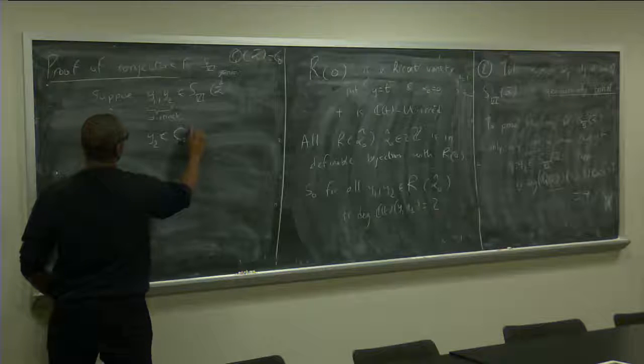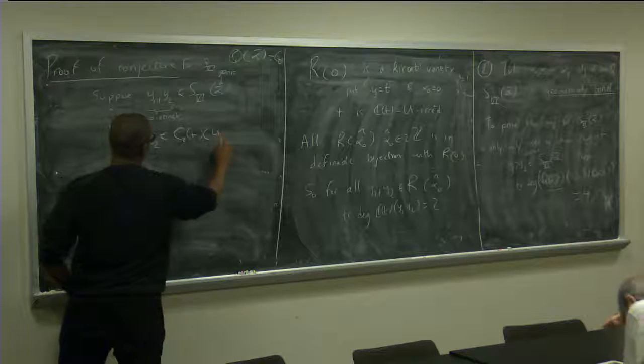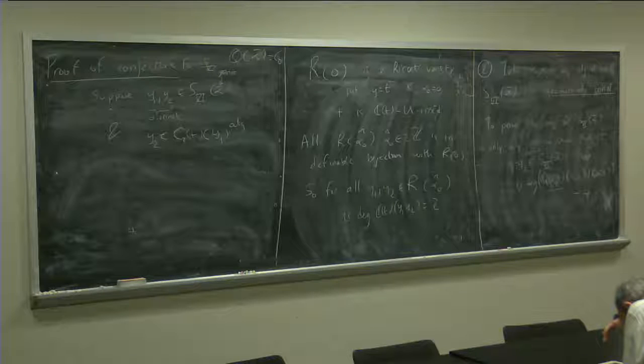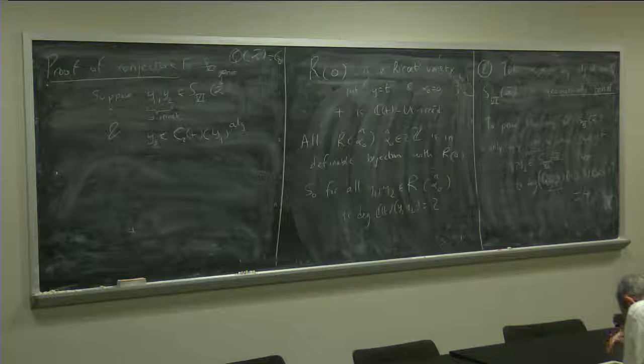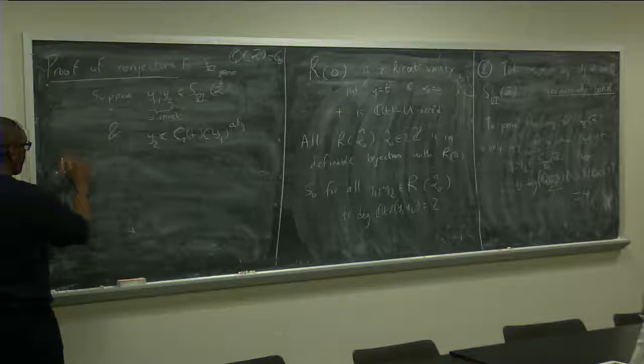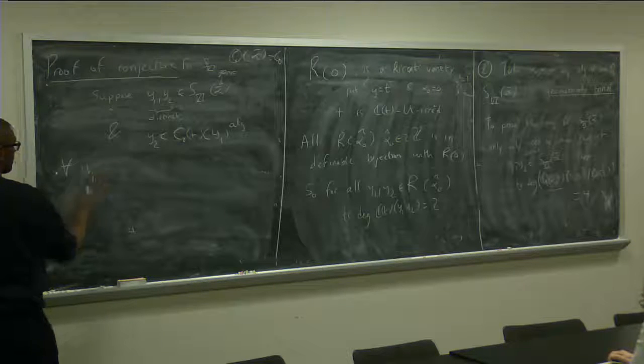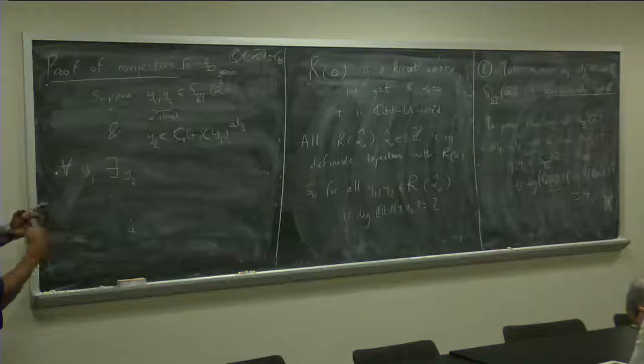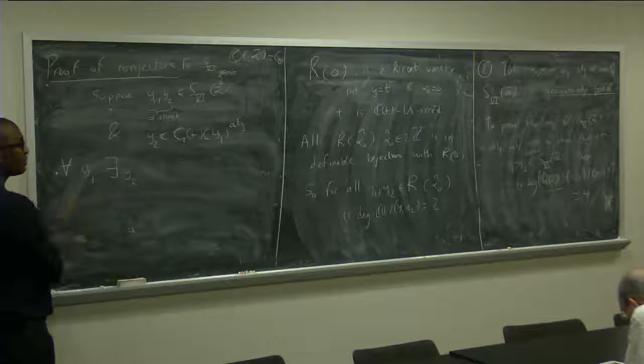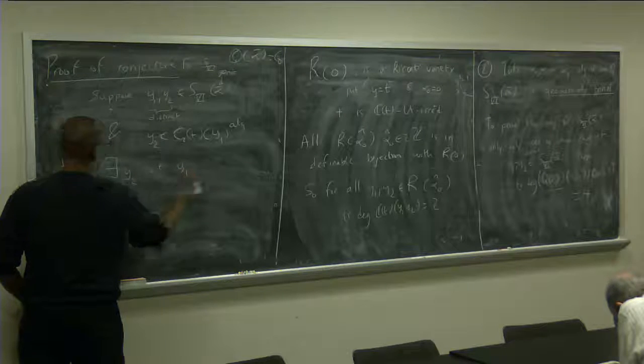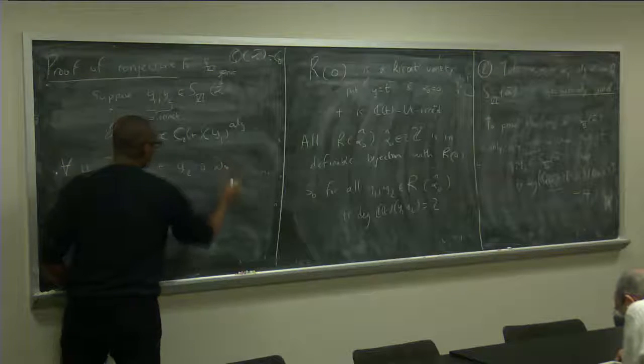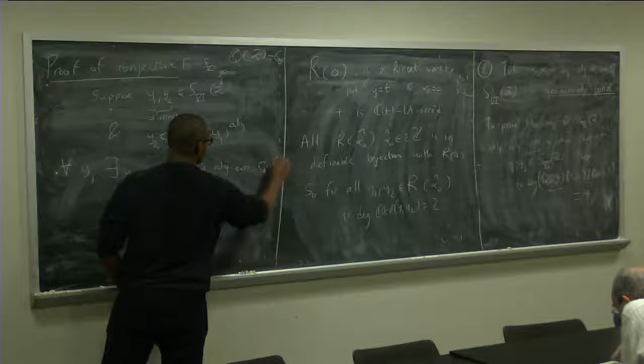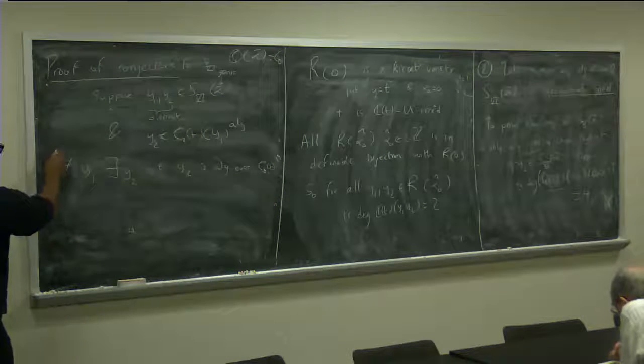And indeed, let me call this one C0. So, C0 T Y1. Right? And to say that for all Y1, there exists Y2.